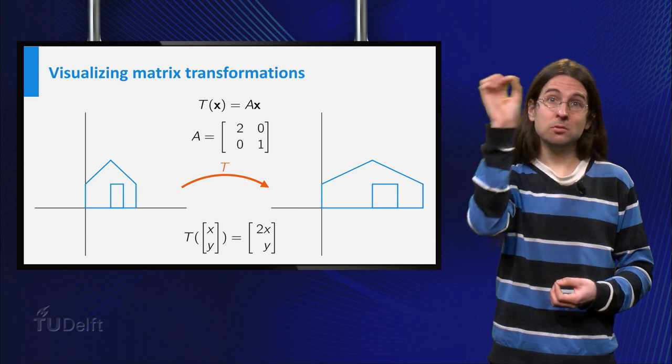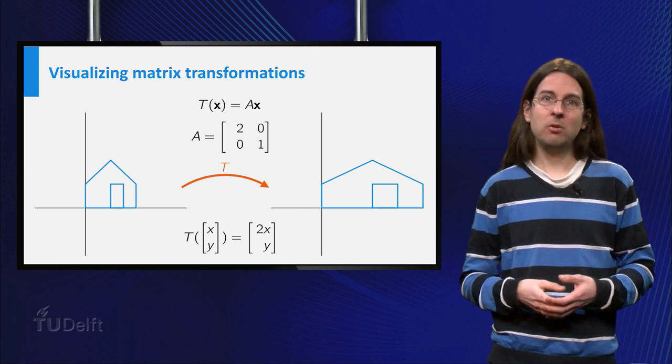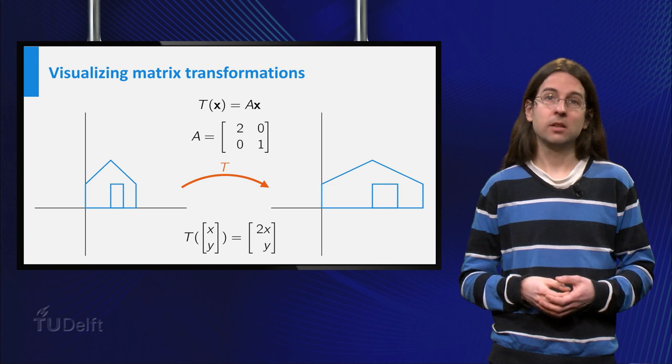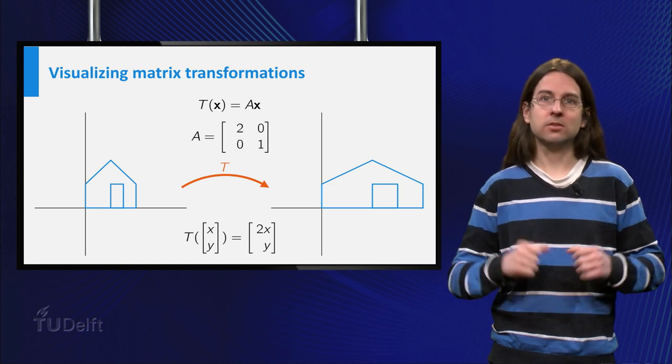The matrix [[2,0],[0,1]] maps (x,y) to (2x,y), so it only stretches in the x direction.